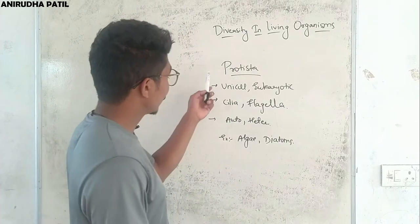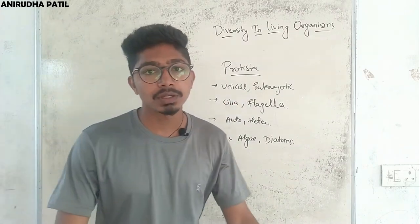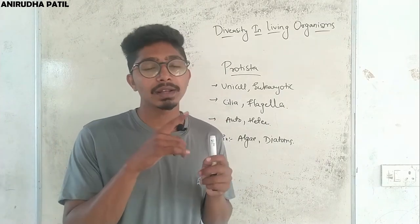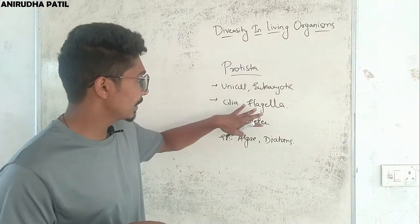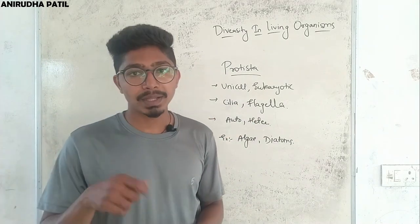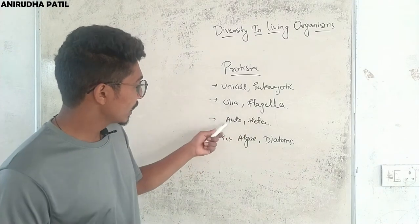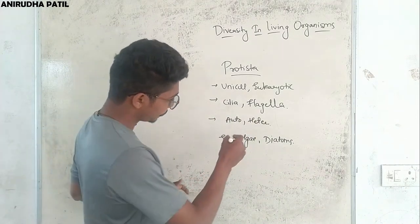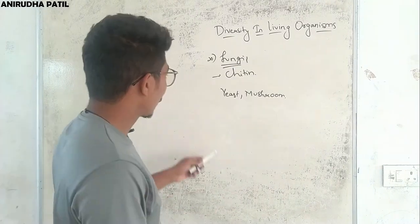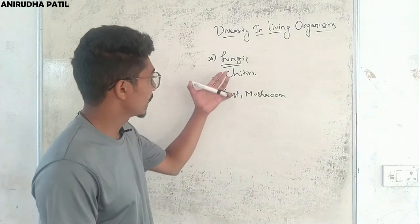Next is Protista. Most organisms are unicellular and eukaryotic. They have cilia — hair-like projections that help in movement and other functions — and flagella, which is a whip-like structure. Cilia are many, while flagella is single. They can also be autotrophic or heterotrophic. Some examples are algae and diatoms. Most fungi live in the protoplasm of the host body, so they are parasites.